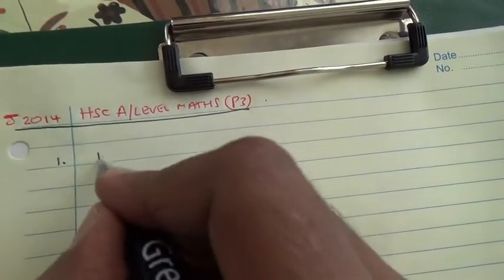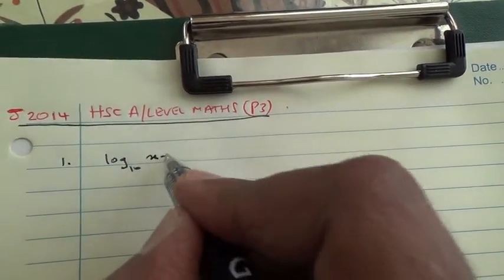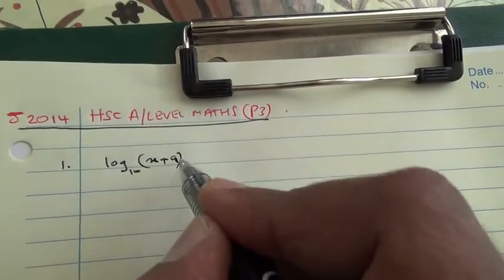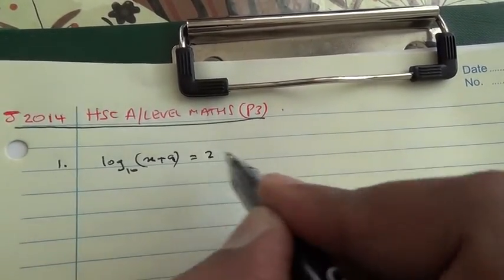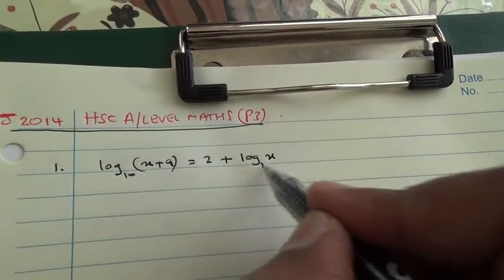Therefore, we have log₁₀(x+9) = 2 + log₁₀x.